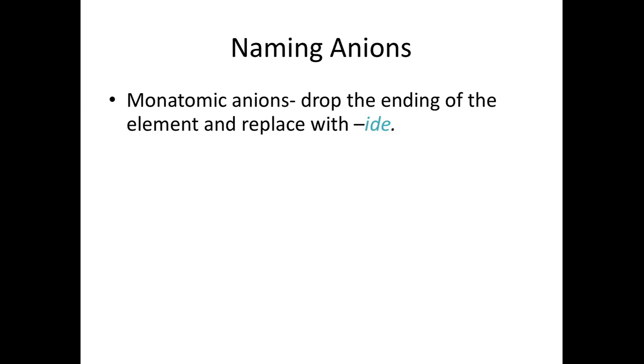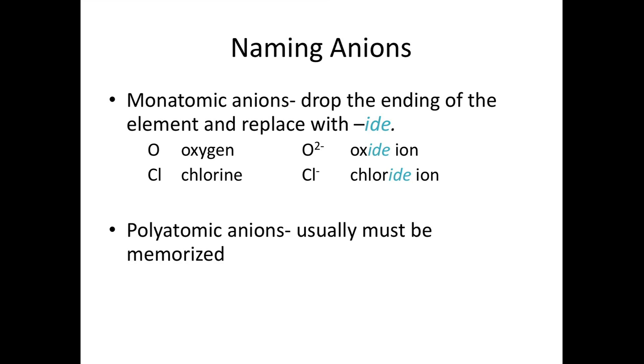Now let's talk briefly about naming anions. If you have a monatomic anion you drop the ending of the element and replace it with -ide. So when oxygen forms a monatomic anion it becomes oxide, and chlorine becomes chloride. The good news about polyatomic anions is that their name is never changed. The bad part is usually polyatomic anions must be memorized.